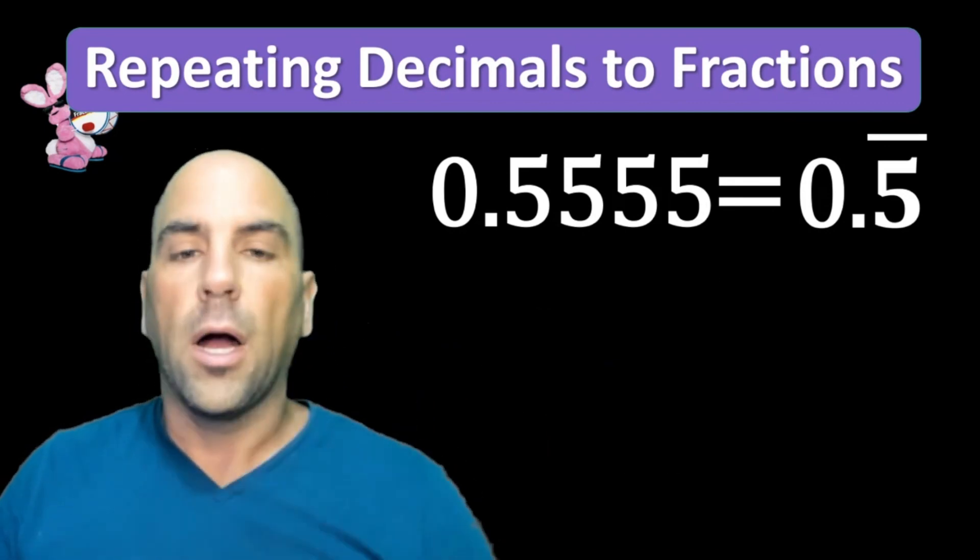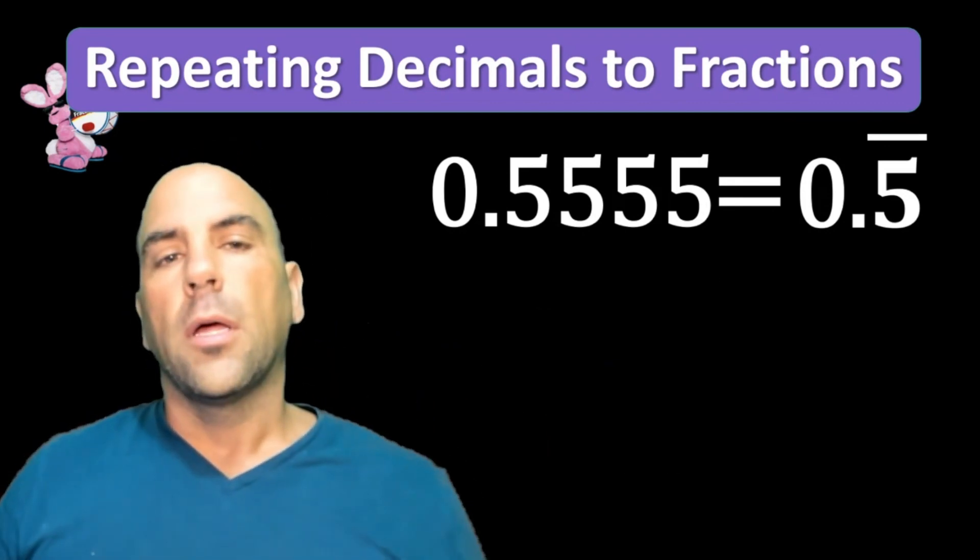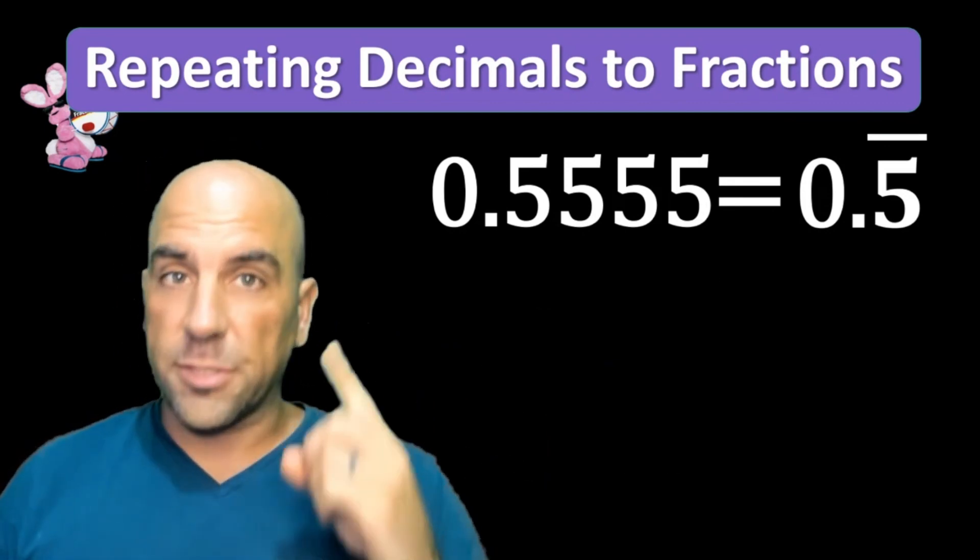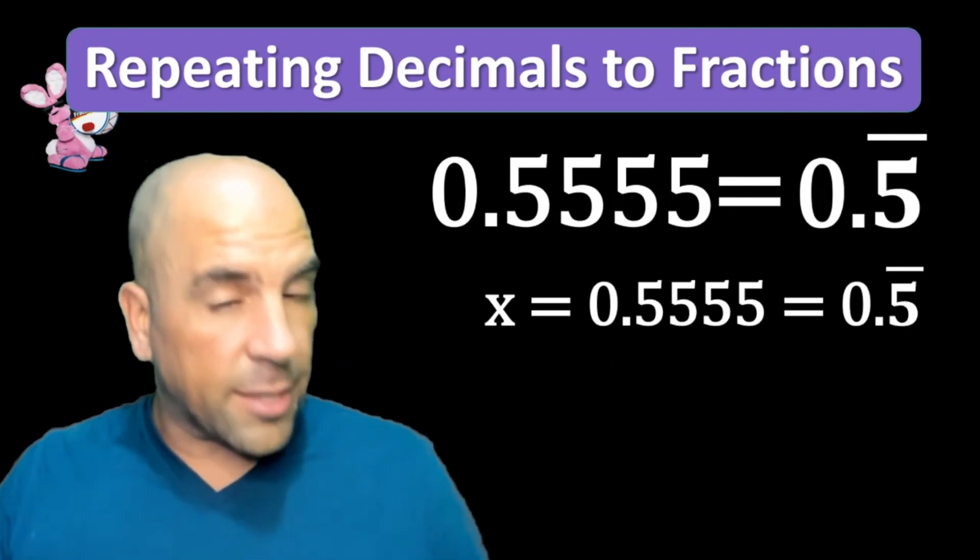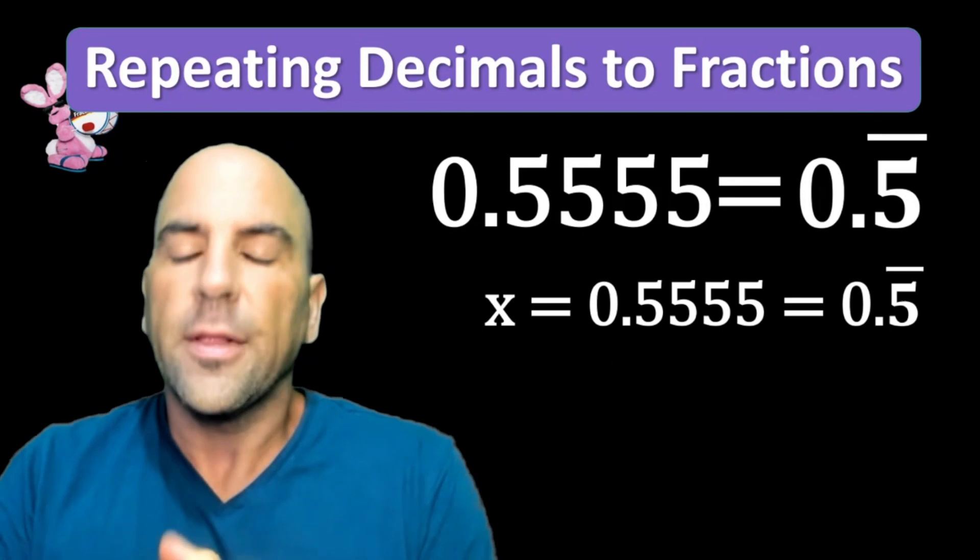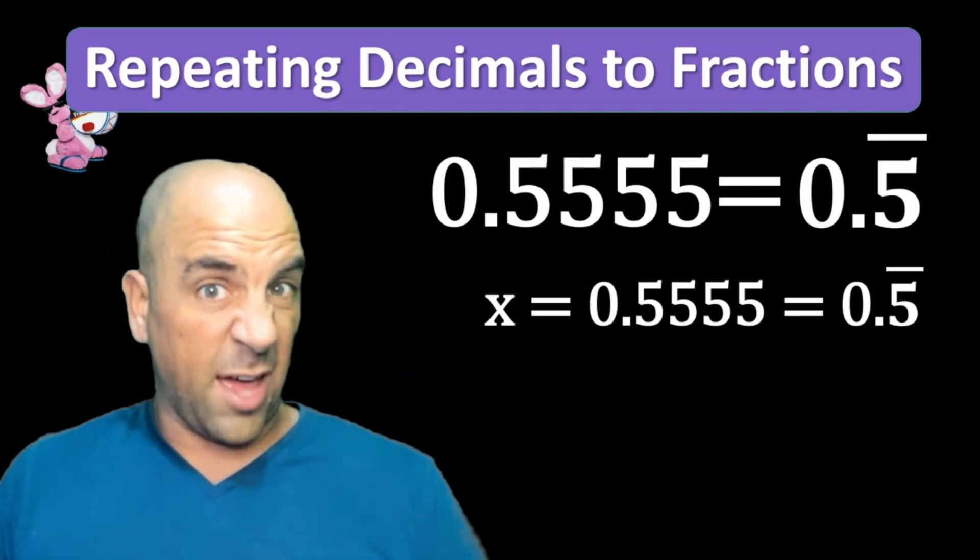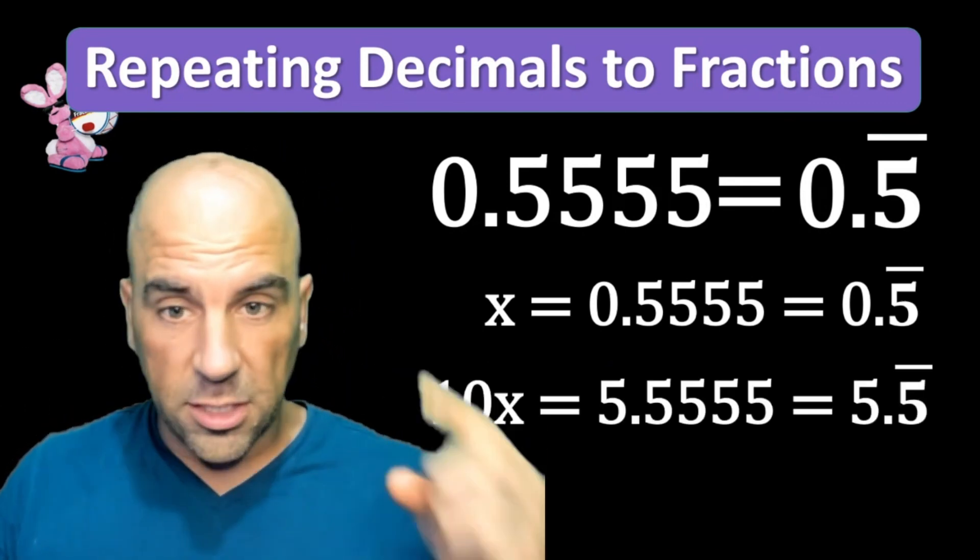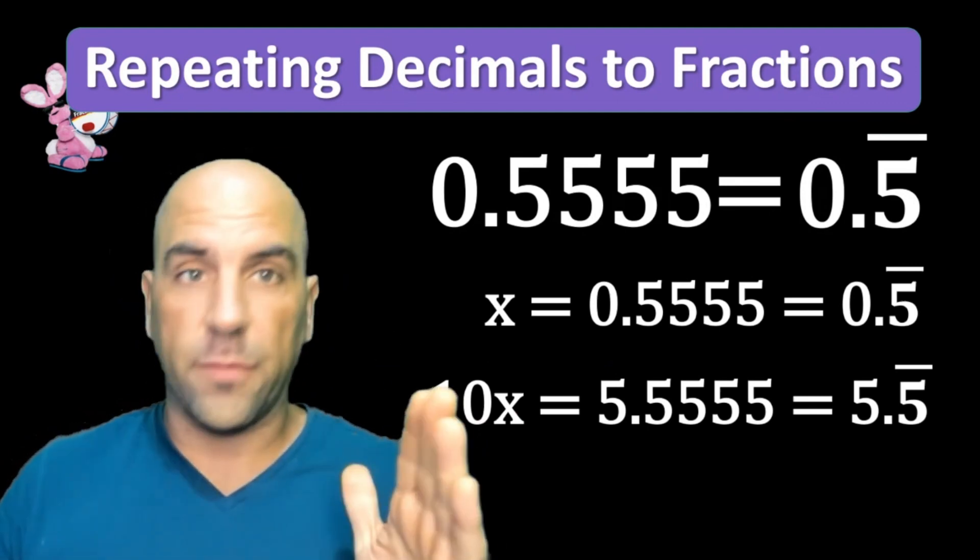Let's see how we would turn this into a fraction. Step one: set it equal to x. There are some tricks we can do when we set it equal to x. Then we need to find out what 10x is. 10x is 5.55 repeating—we multiply by 10 so the decimal moves one over.